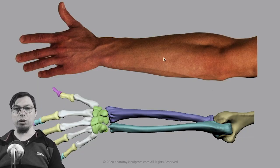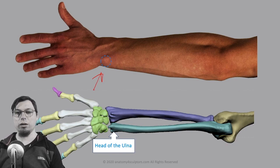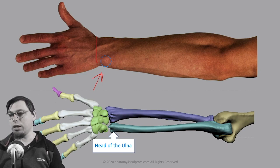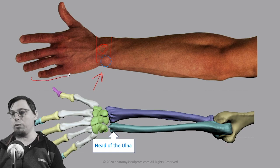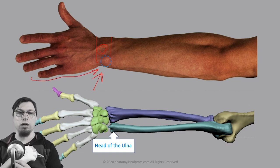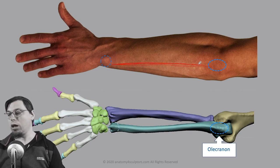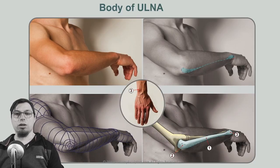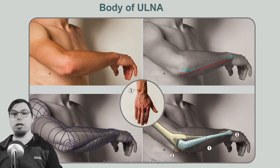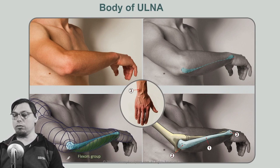Let's look at the ulna. At the distal end, the ulna has a round-shaped head called the head of the ulna, which is fairly visible at the wrist — just next to where a watch would sit, or you can trace it from the little finger. At the proximal end is the olecranon, the elbow. The line connecting these two bony landmarks defines the body of the ulna, which serves as the border between the flexor muscle group and the extensor muscle group.